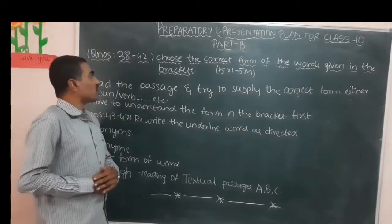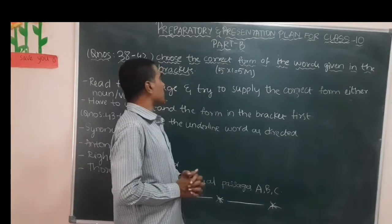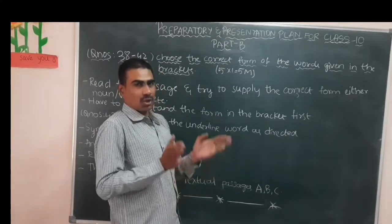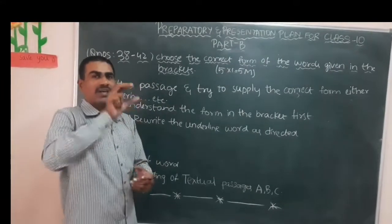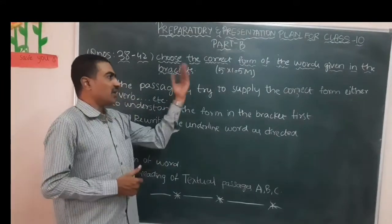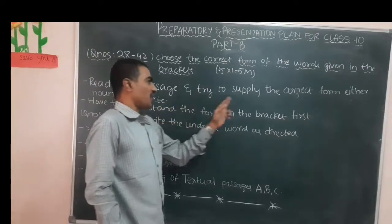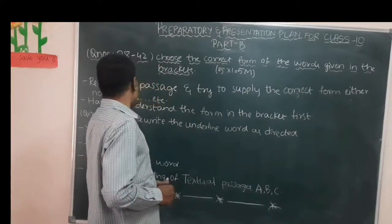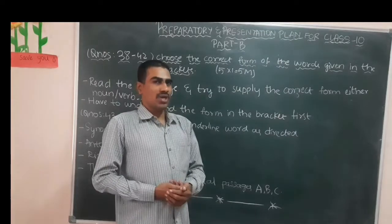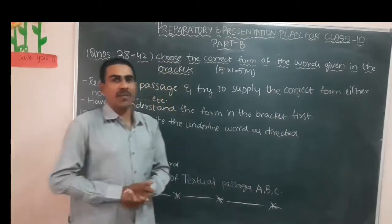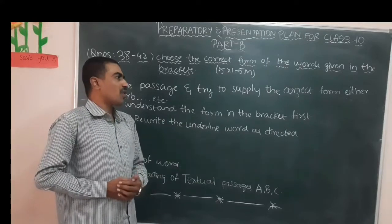Now let us look at section numbers 38 to 42: choose the correct form of the words given in the brackets. A base word is given, and based on it you have to guess the correct form and write it in the blank. Read the passage and try to supply the correct form — either a noun, verb, or any other form that is suitable. If you do not have a complete idea about the passage, you will definitely not be able to write the proper form.